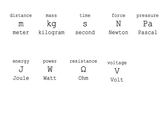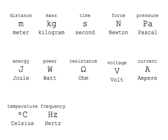To measure voltage, we commonly use the unit volt, abbreviated by an uppercase V. To measure current, we commonly use the unit ampere, abbreviated by an uppercase A. To measure temperature, we commonly use the unit Celsius, abbreviated by an uppercase C. To measure frequency, or how many times something happens in a given unit of time, we commonly use the unit of Hertz, abbreviated by Hz.